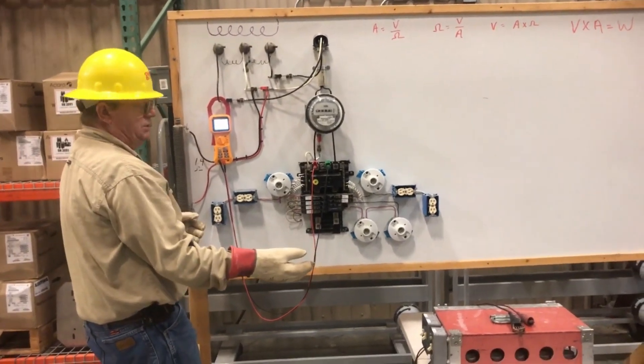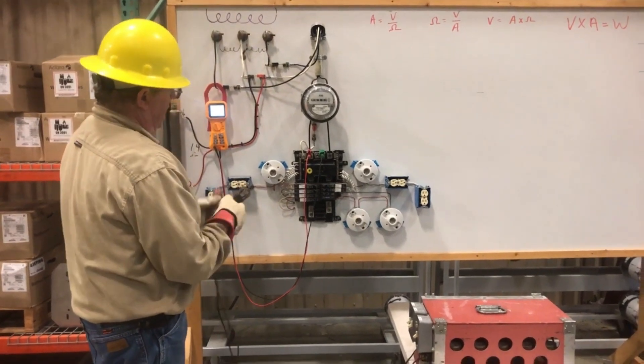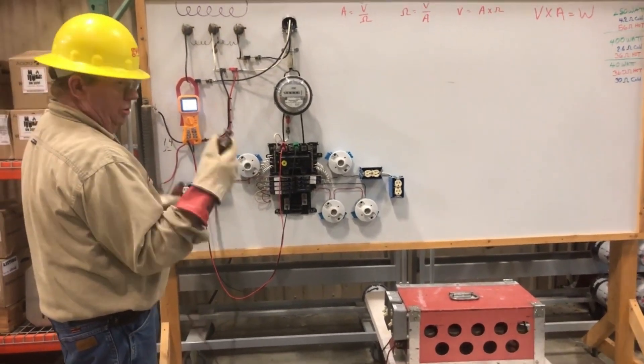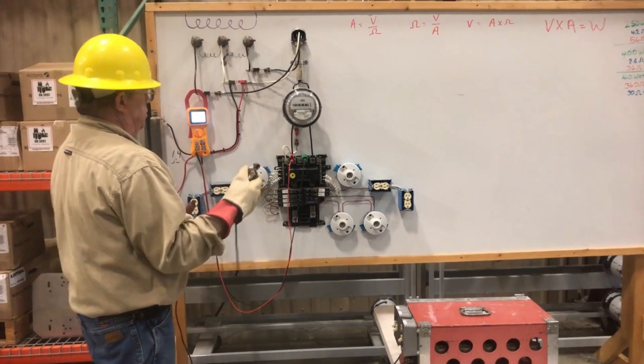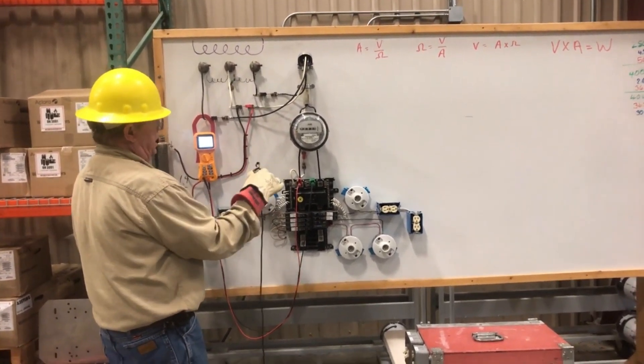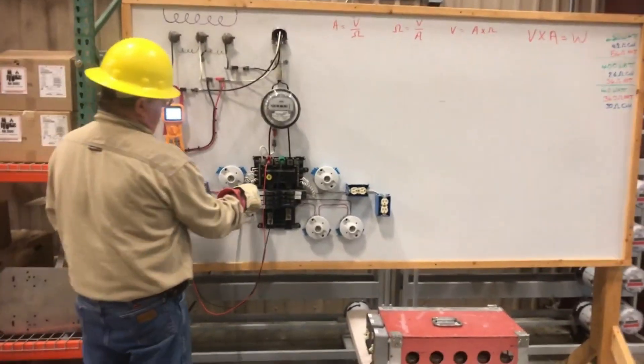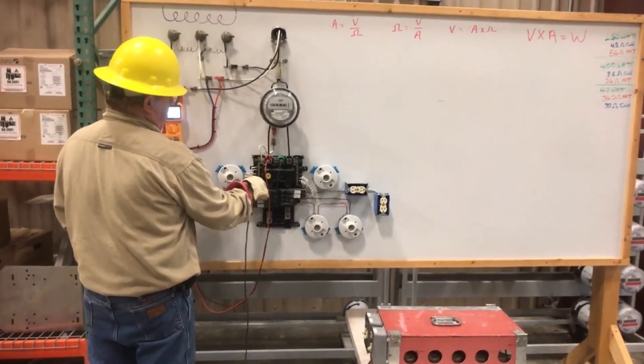Our load box is going to get connected neutral anywhere he wants. Usually, if you're above the disconnect panel, you'd be in the meter socket. Meter will be laying on the ground. Okay? We're going to connect the neutral right here.